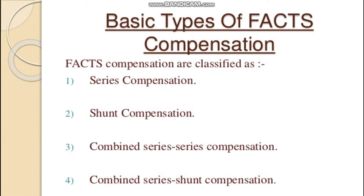The basic types of compensation are: series compensation, shunt compensation, combined series-series compensation, and combined series-shunt compensation. To increase the power transfer capability, by connecting a capacitor at the middle of the line or at the sending or receiving end. The general transmission line is inductive in nature. By connecting a capacitor — which is leading in nature — to the lagging line, resonance may occur and causes the power factor to increase and losses to be minimized.